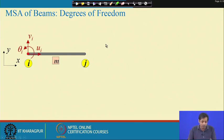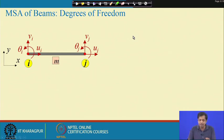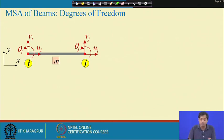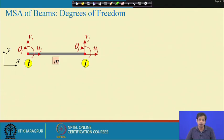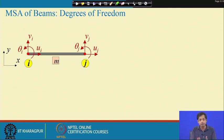The 3 degrees of freedom at node i are: ui and vi — translations in the x and y directions — and theta_i — rotation about the z-axis. Similarly at node j we have 3 degrees of freedom. The sign convention we are taking is: translation in the upward direction is positive, and rotation in the anticlockwise direction is positive. Whatever sign convention you take, you have to construct the stiffness matrix consistently according to it.